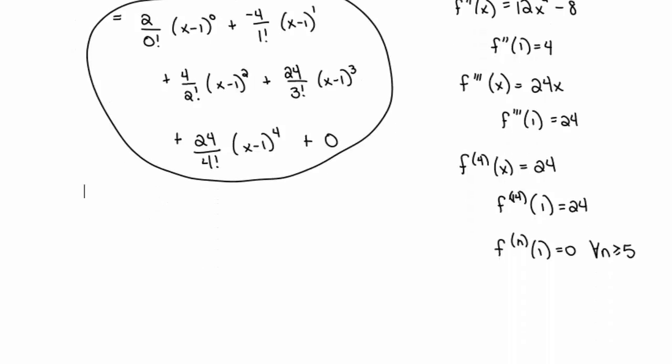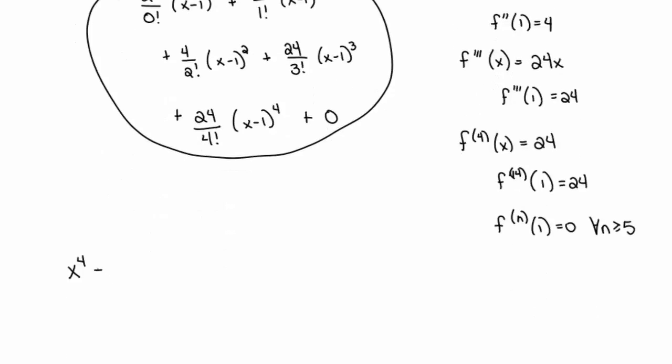Let's go ahead and rewrite this. And in fact, what I'm going to do, just because I want to, I'm going to say therefore x to the fourth minus four x squared plus five must be equal to, let's see, we have two minus four x minus one. That's going to be four over two factorial, just two, so plus two x minus one squared. Three factorial is six, six goes into 24 four times, so that's four x minus one cubed. And finally, four factorial is 24, so that's just going to be a plus x minus one to the fourth.